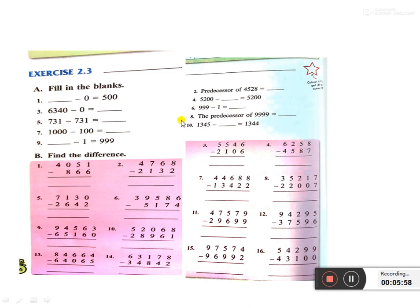Question 7: you have to do the subtraction yourself. Question 8: the predecessor of 9999 — write 9999 first, then minus 1. Answer is 9998. Question 9: the answer is 999. 1000 minus 1 is equal to 999. Question 10: 1345 minus blank equals 1344. You can reduce by only 1, so 1345 minus 1 is equal to 1344.